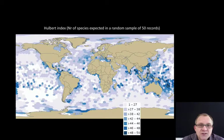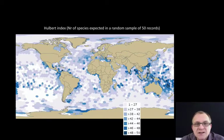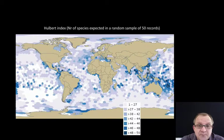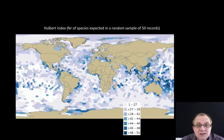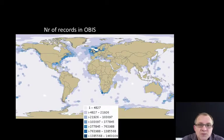Looking at one of our summary maps — in this case the Hilbert index, or the number of species expected in a random sample of 50 records in OBIS — you can clearly see that Southeast Asia, or the Coral Triangle as it's often called, is very biodiversity rich. Star blue means more than 48 to 50 species in a random sample of 50 records, indicating very high biodiversity. Although the number of records in OBIS in Southeast Asia is very poor, so there is definitely a huge gap in OBIS.